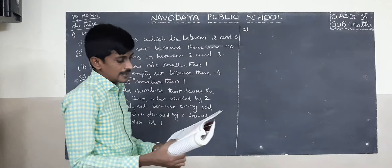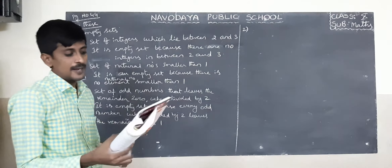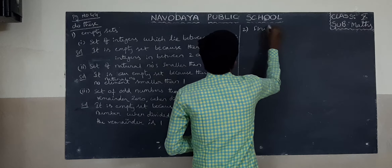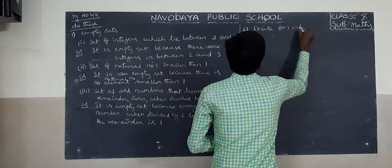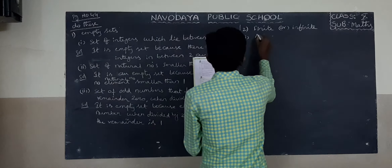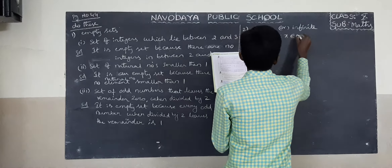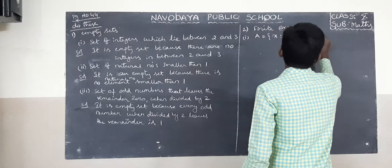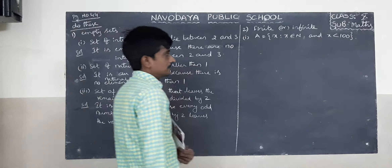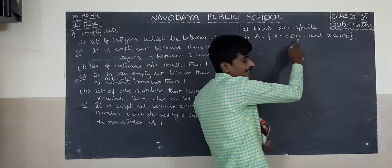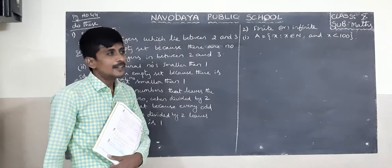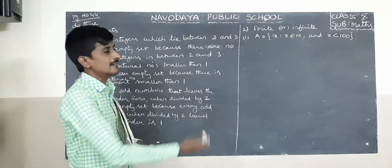Second round: state which of the following sets are finite or infinite. First one: A equals the set of x such that x belongs to natural numbers and x is less than 100. Here x is a natural number and less than 100. Is it countable or uncountable? It is countable because 1 to 99 is less than 100.